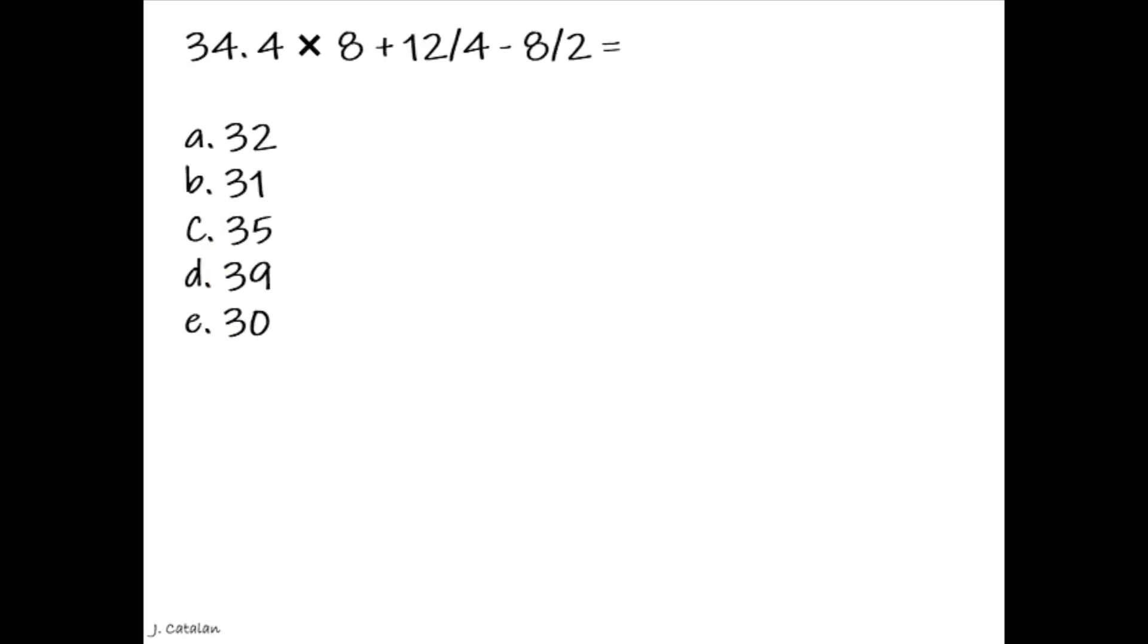Question. 4 multiplied by, 8 added by 12 fourths subtracted by 8 halves equals. Answer. 31.